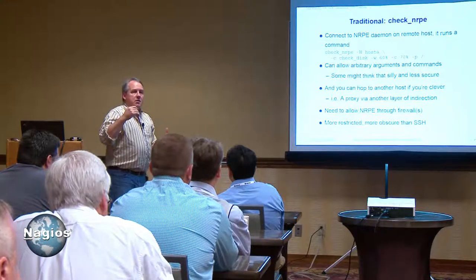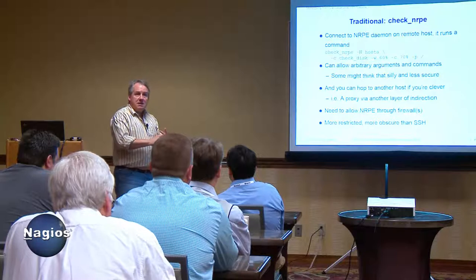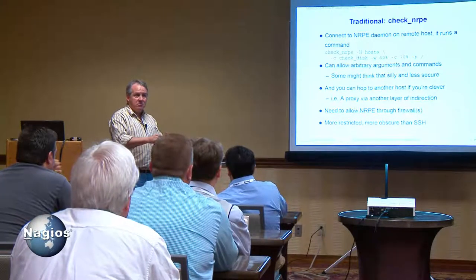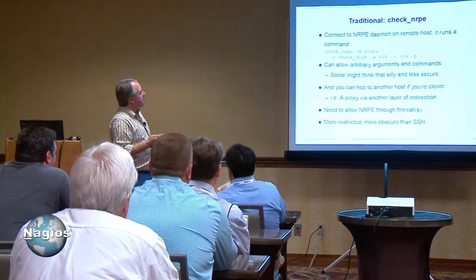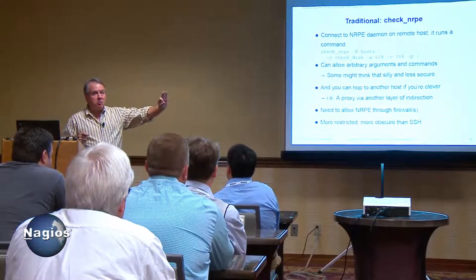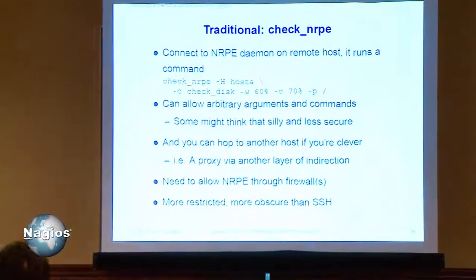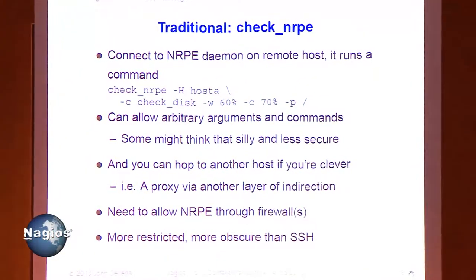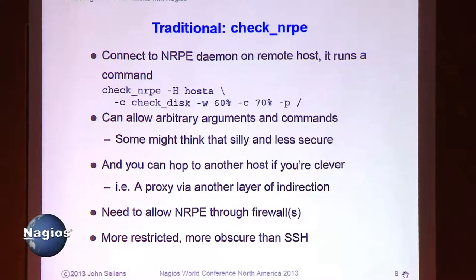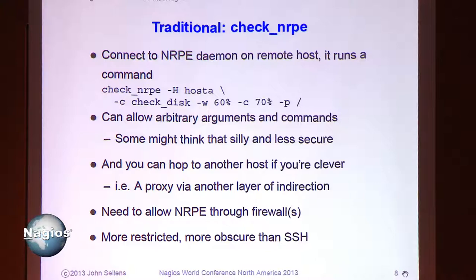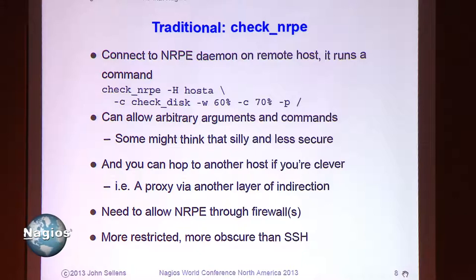We're probably at least vaguely familiar with NRPE — the Nagios Remote Plugin Executor — where you can connect to a particular port on a remote machine and say, run one of these plugins. When we normally think of that, we think of doing local checks on that remote machine. But really, you can configure NRPE to run any command for you, and if you configure it with the 'don't blame Nagios' configuration option to let you run arbitrary arguments. There's nothing preventing it from doing a check against another machine in that remote location.